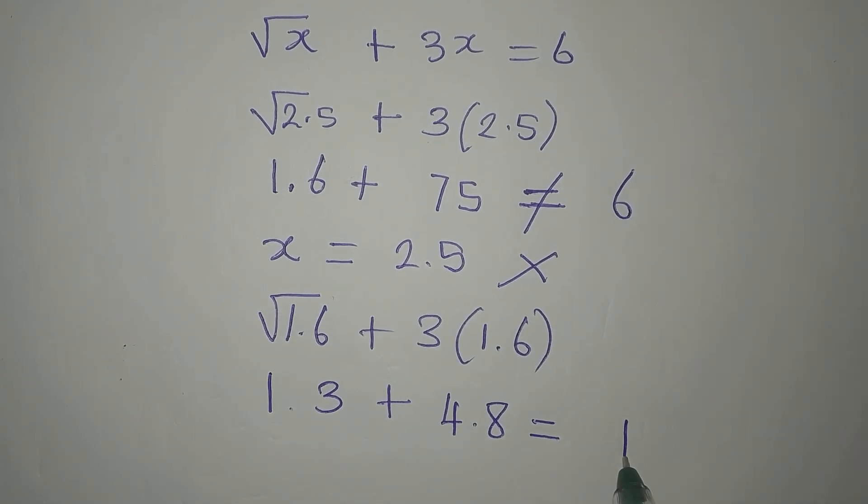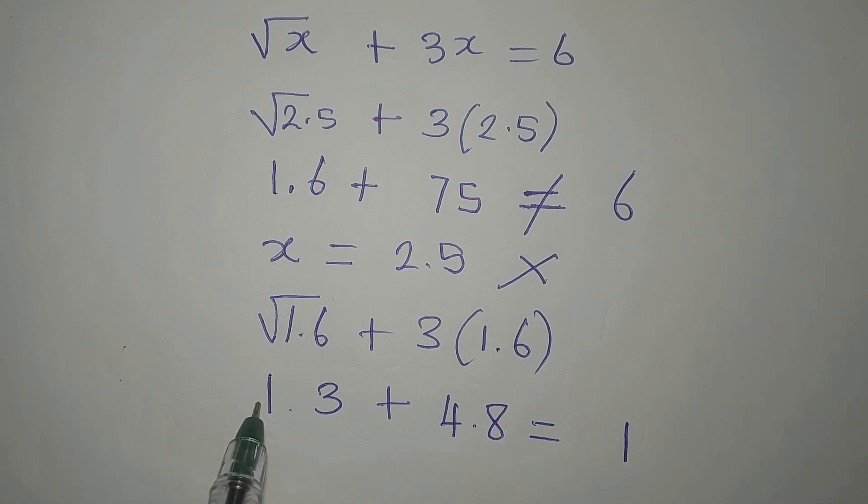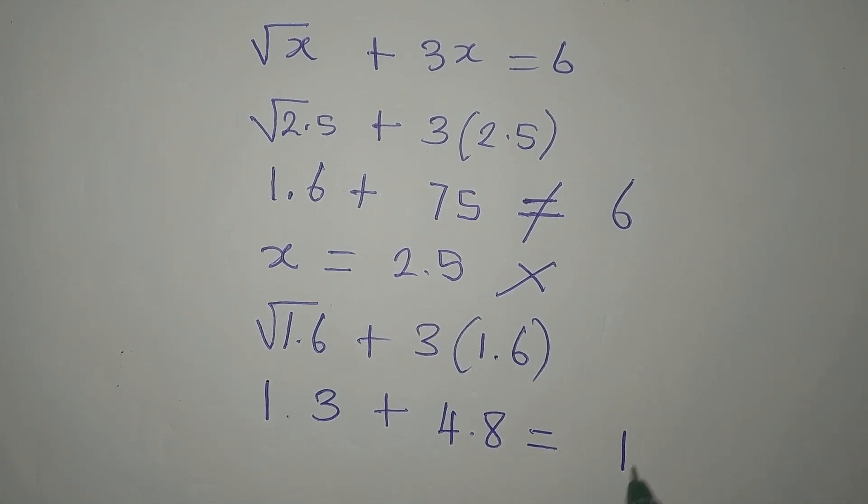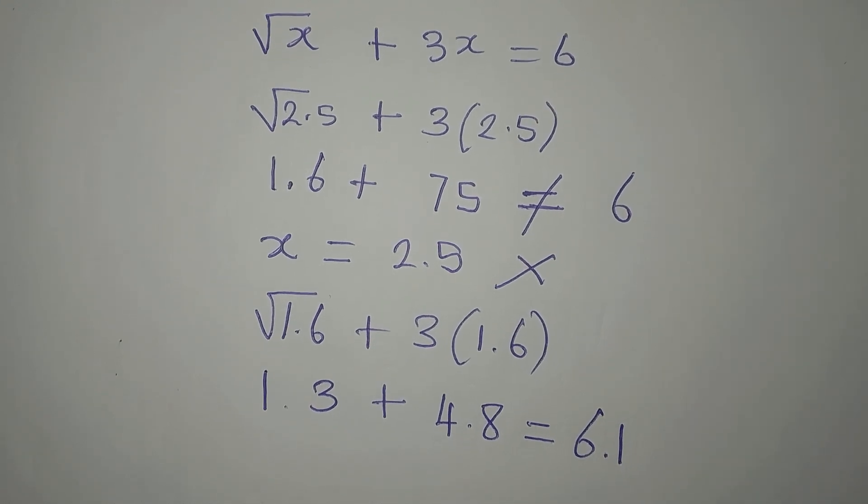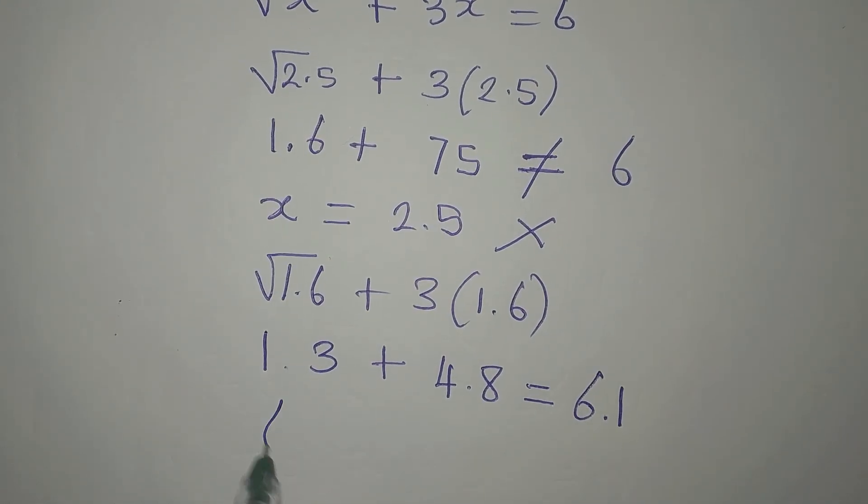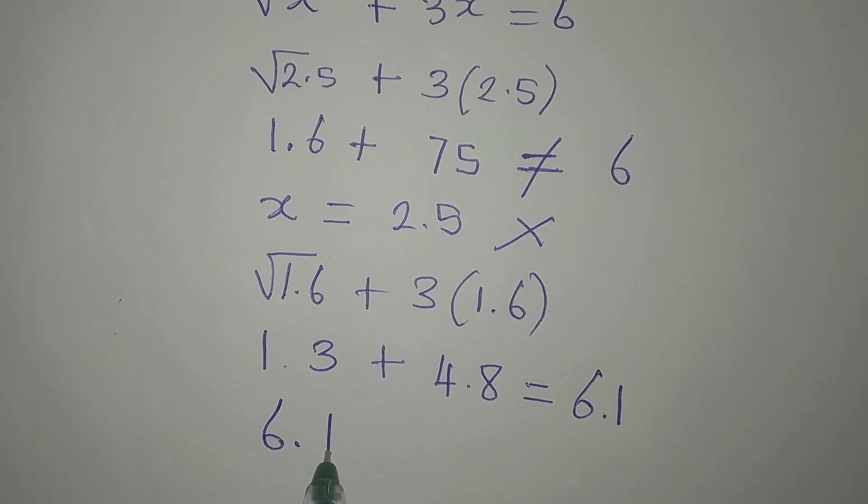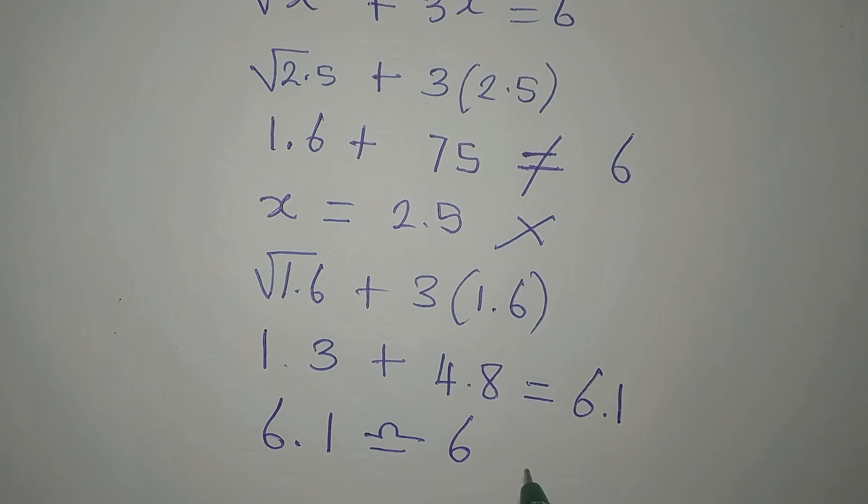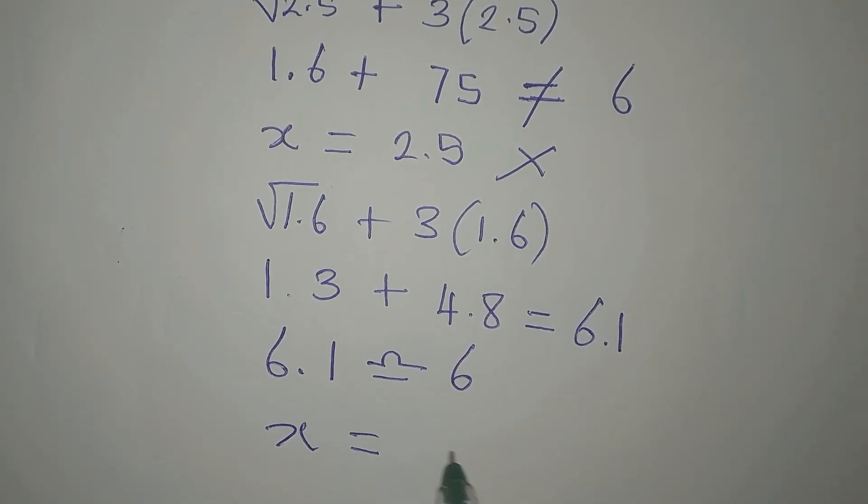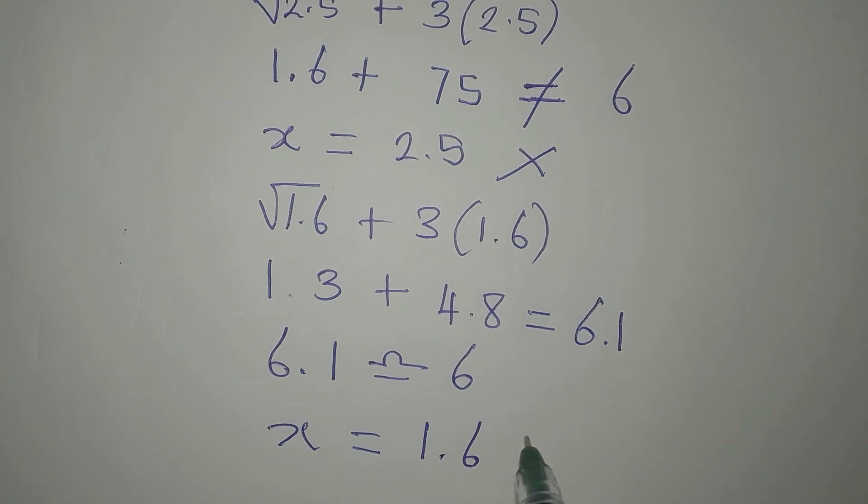Then 4 plus 1 is 5 plus 1 that we carried, we have 6.1. And this is approximately, we can say that 6.1 is approximately 6. So, this means that our value x equals 1.6 satisfies the equation.